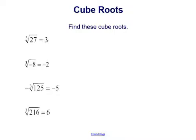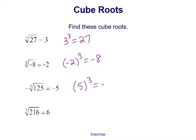The cube root of 27 equals 3, because 3 cubed equals 27. The cube root of negative 8 equals negative 2, because negative 2 cubed equals negative 8. The negative cube root of 125 equals negative 5, because 5 cubed equals 125 and the negative on the outside makes the answer negative. And the cube root of 216 equals 6, because 6 cubed equals 216.